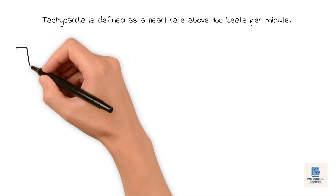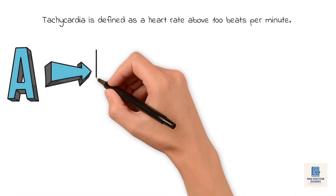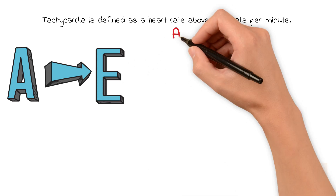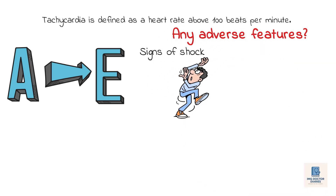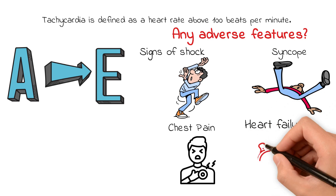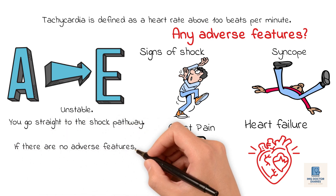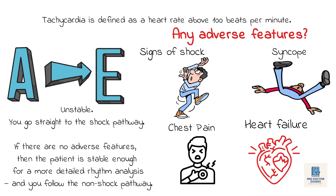Tachycardia is defined as a heart rate above 100 beats per minute, but not all fast heart rates are dangerous. That's why the first step is always a proper ABCDE assessment. While you're assessing the patient, ask yourself: are there any adverse features? That means signs of shock like low blood pressure or poor perfusion, syncope — has the patient collapsed or blacked out — chest pain which could indicate myocardial ischemia, or signs of heart failure like pulmonary edema. If any of these are present, the patient is unstable and you go straight to the shock pathway. If there are no adverse features, the patient is stable enough for a more detailed rhythm analysis, and you follow the non-shock pathway.